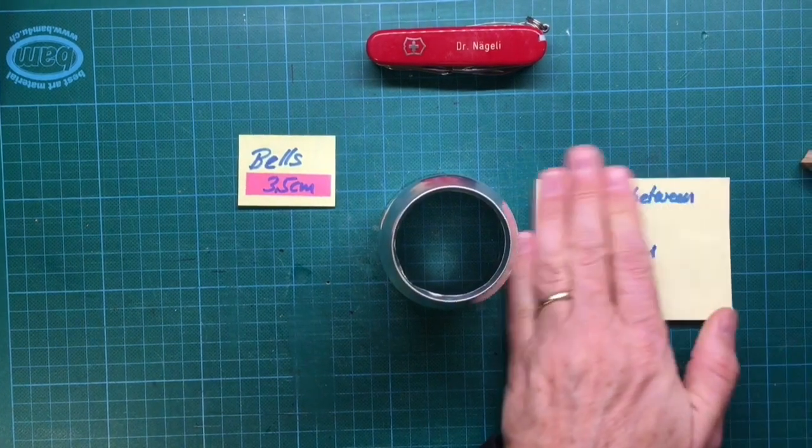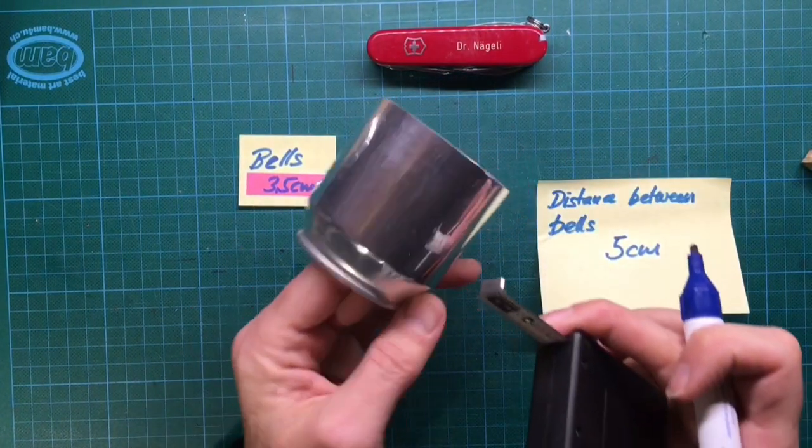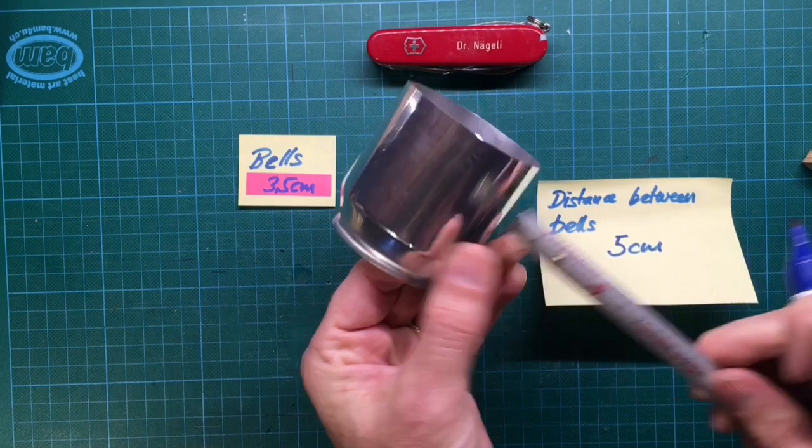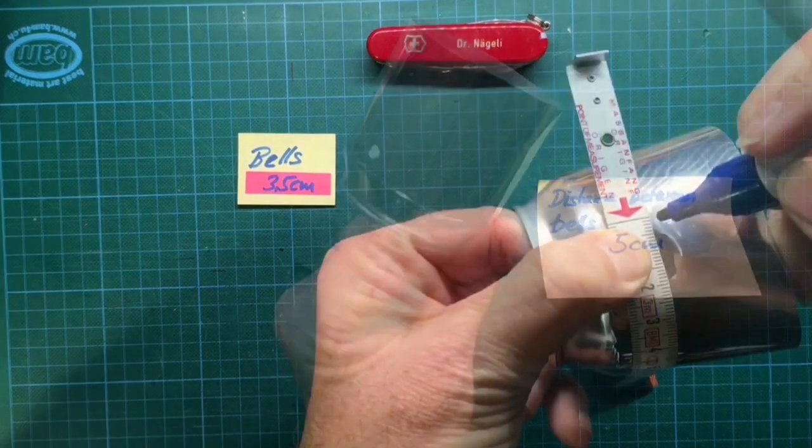Now the same procedure is repeated for the screws that are used to fix the bells. The dimensions used here are given on the post-it in the video. And this was already everything about the main structure.